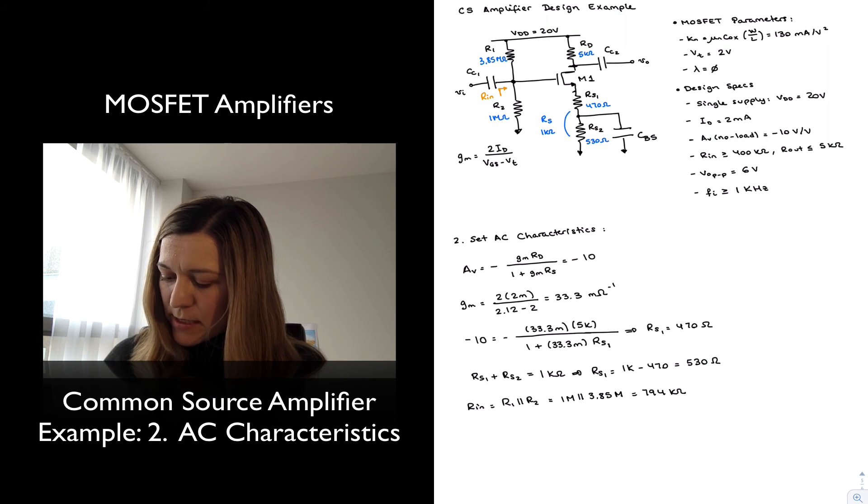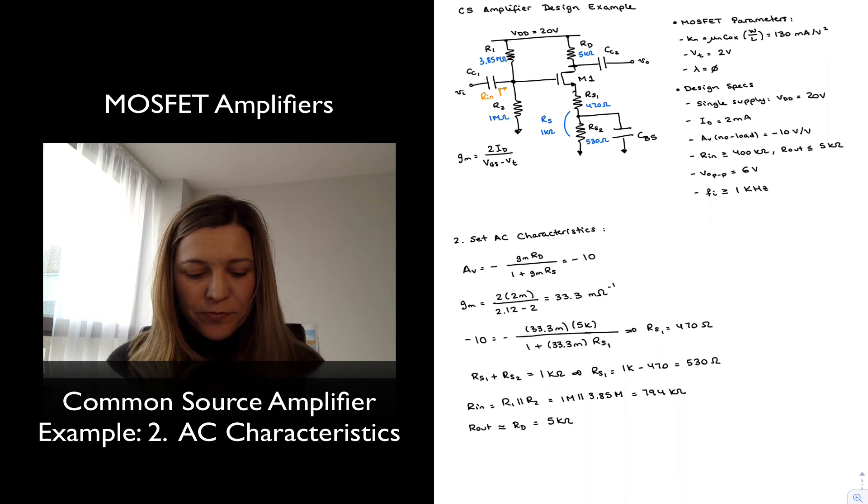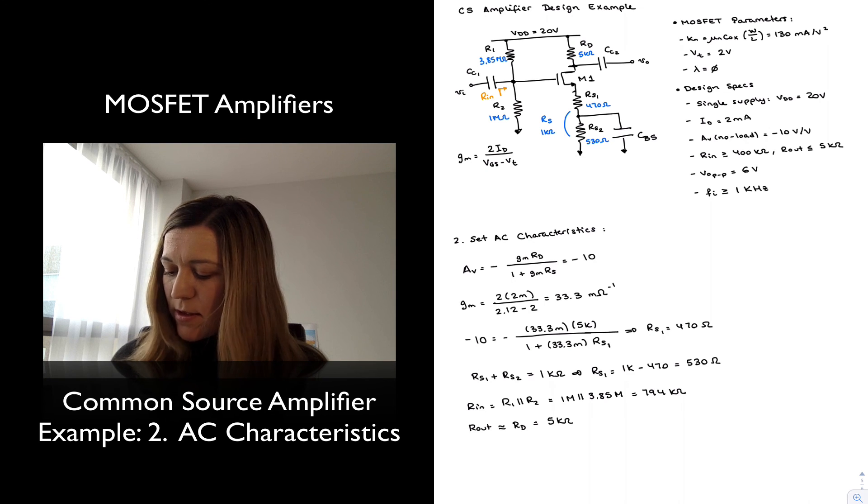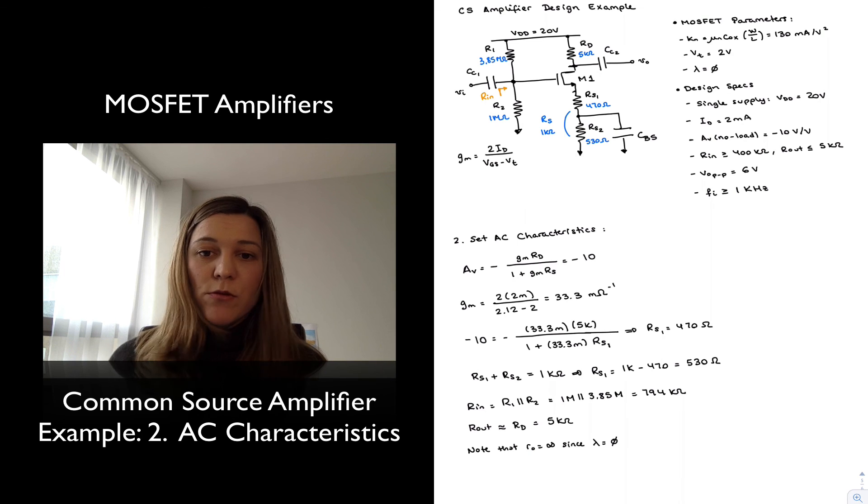And my R out resistance, which needed to be less than or equal to 5 kOhms, is going to be approximately equal to RD, so approximately equal to 5 kOhms. So we've met that spec as well. I'm going to say, note that R2 are always equal to infinity, since lambda we assume it is equal to 0.